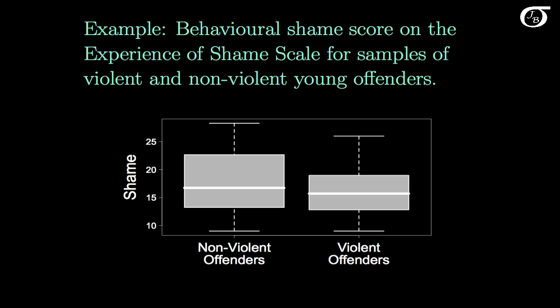Here are behavioral shame scores on the Experience of Shame Scale for samples of violent and non-violent young offenders. Higher shame scores are indicative of greater shame in their behavior, and it looks like the non-violent offenders might tend to have greater shame when compared to violent offenders. But is that a significant difference? Is that a real effect, or is it likely to see differences of this size due to chance alone?